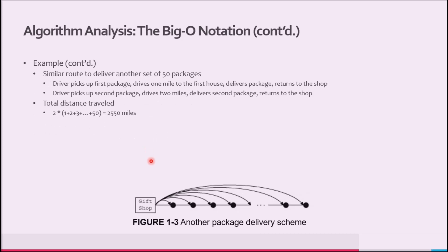Another driver has a similar route to deliver another 50 set of packages. The driver looks at the route and delivers the packages as follows: the driver picks up the first package, drives 1 mile to the first house, delivers the package, then comes back to the shop. Next, the driver picks up the second package, drives 2 miles, delivers the second package, and returns to the shop. The driver then picks up the third package, drives 3 miles, delivers the package, and comes back to the shop, and so on.